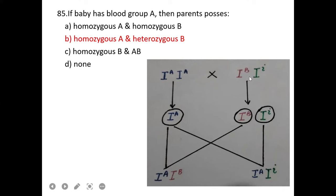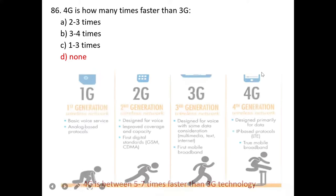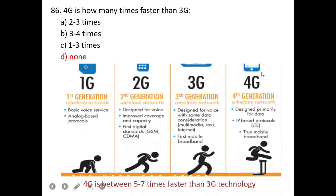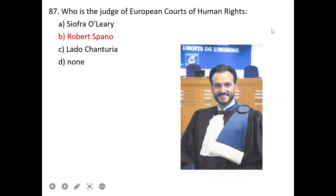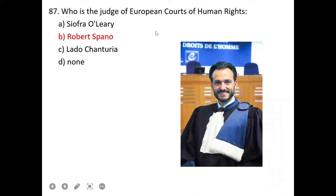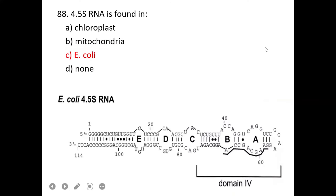4G is how many times faster than 3G? 4G is five to seven times faster than 3G. D is correct. Who is a judge of European Court of Human Rights? Robert Spano is a judge of the European Court of Human Rights. 4.5S RNA is found in E. coli.